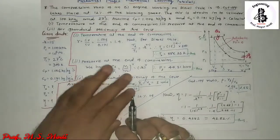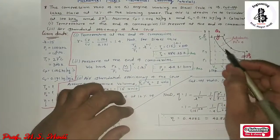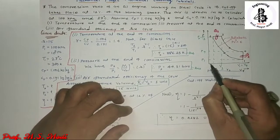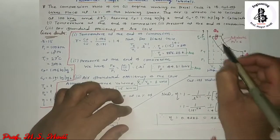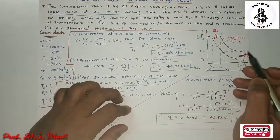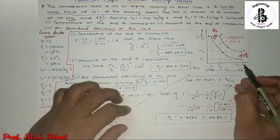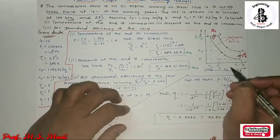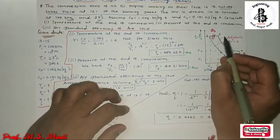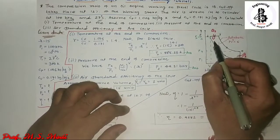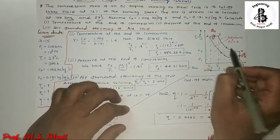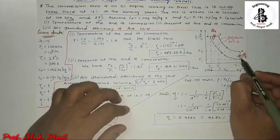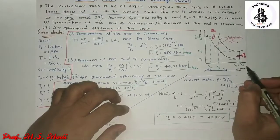Let us look at the PV diagram of the diesel cycle. The x-axis represents volume and the y-axis represents pressure. From the diesel cycle PV diagram: process 1 to 2 is the adiabatic compression process, and 2 to 3 is the constant pressure heat addition process. Process 3 to 4 is the adiabatic expansion process.